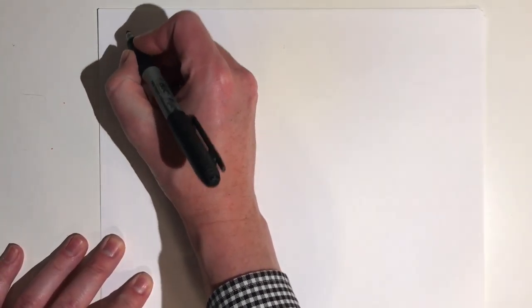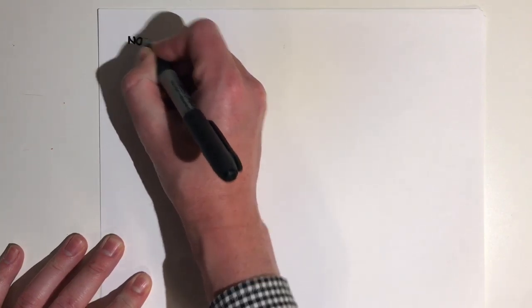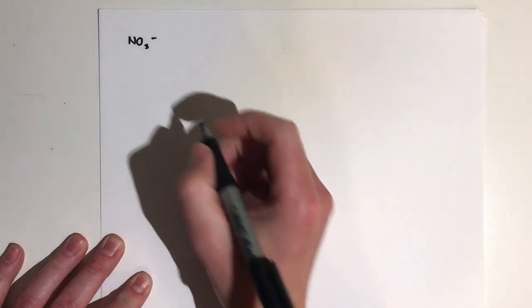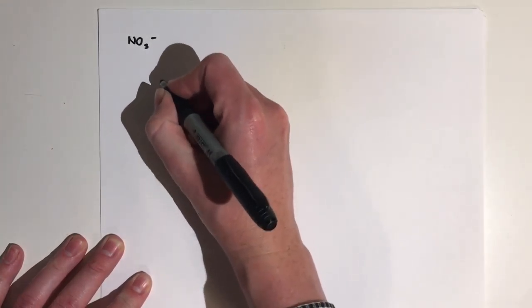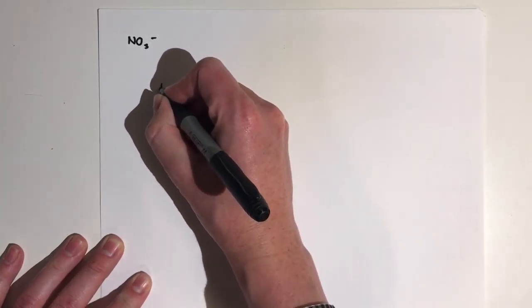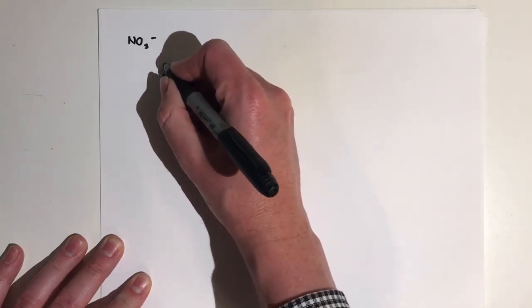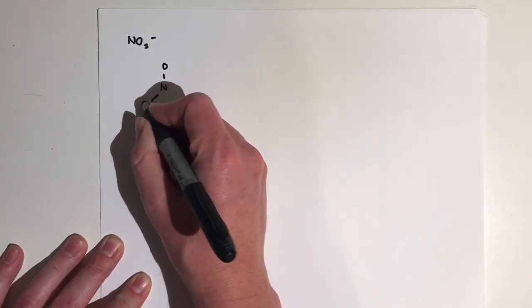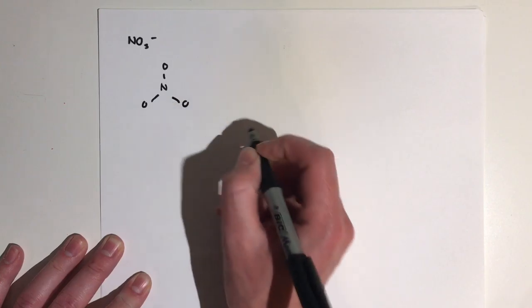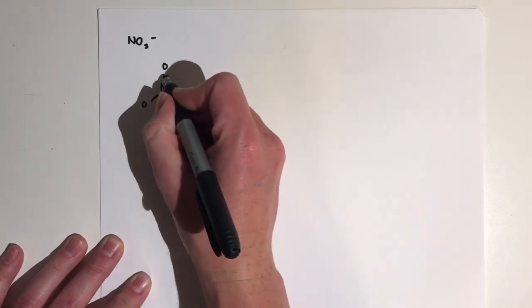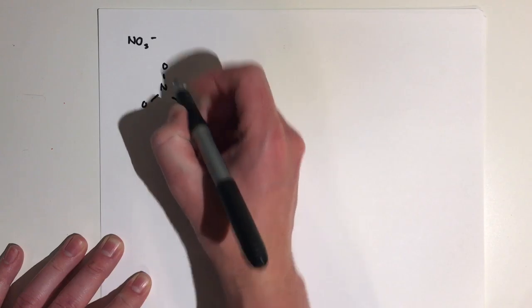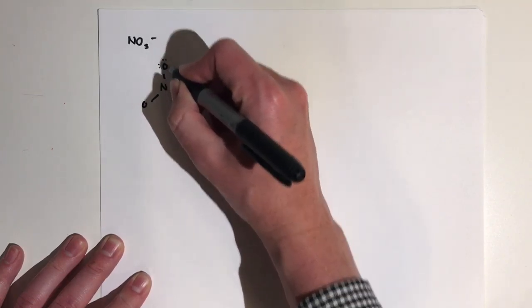So just to start out, let's draw the Lewis structure for NO3-. We're going to assume that everyone watching this is already pretty comfortable drawing Lewis structures. We're going to start with our N in the middle, and then an oxygen, an oxygen, and an oxygen. If we do the math here, this is going to have 24 electrons.